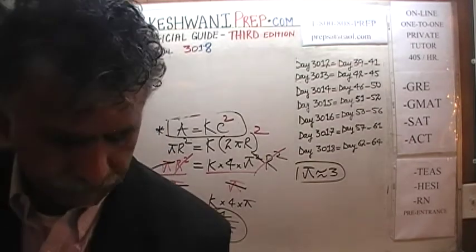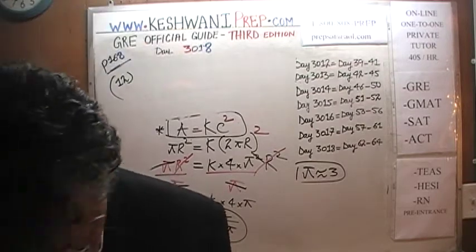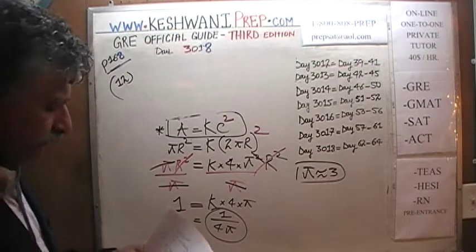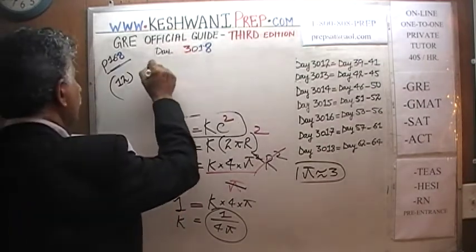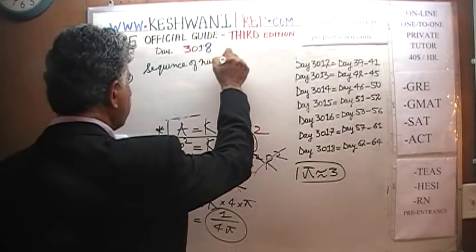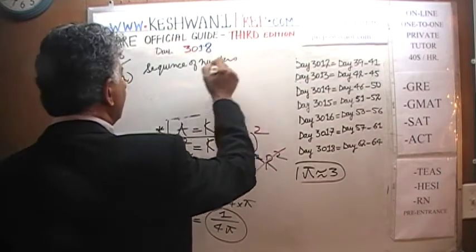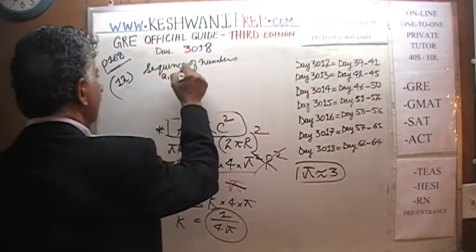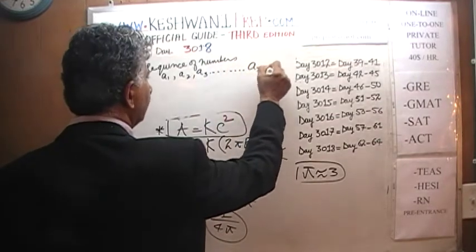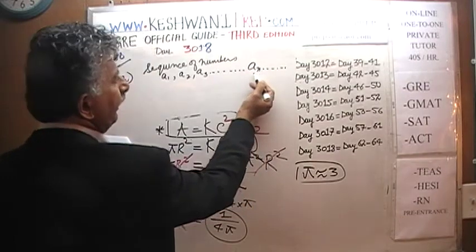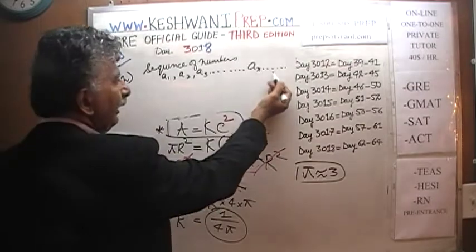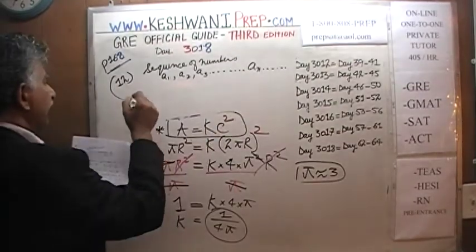Problem number 12 is a little involved. We have a sequence of numbers: a₁, a₂, a₃, and so on, up to aₙ, aₙ₊₁, aₙ₊₂, and so forth — it just goes on forever. It is defined by a certain relationship.